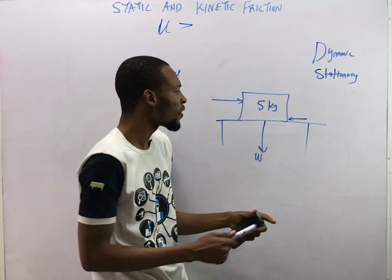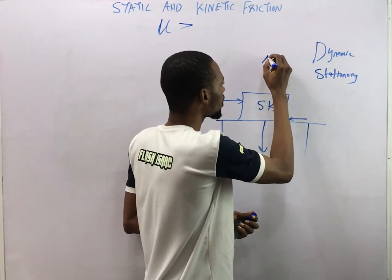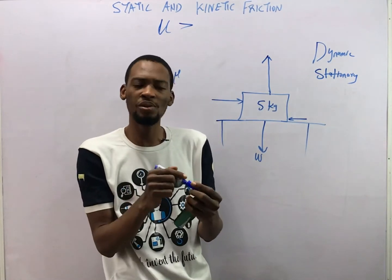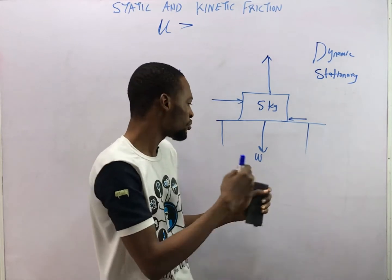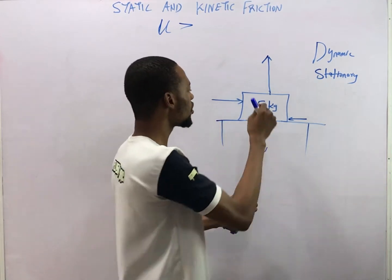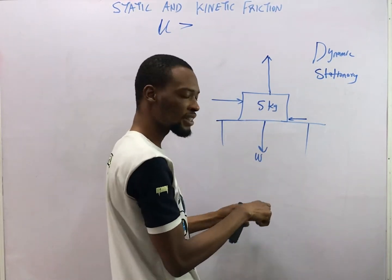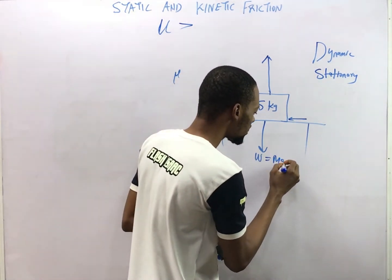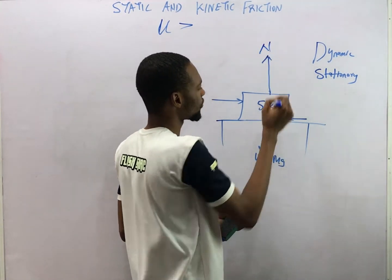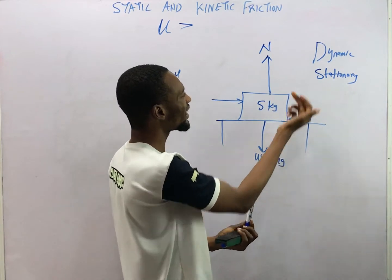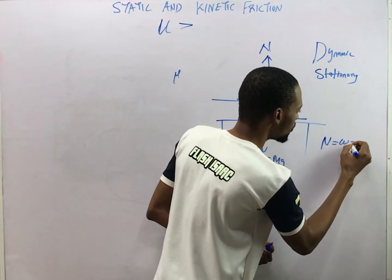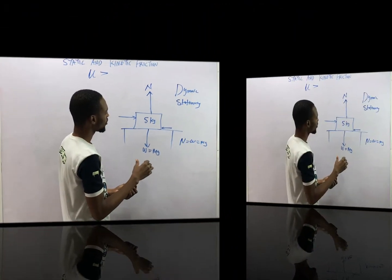That upward force is what we call the normal reaction. Remember Newton's Third Law: for every action there's an equal and opposite reaction. So the weight of the body acts downward, and weight equals mg. Weight equals the normal reaction, so normal reaction equals W equals mg. If the body is being pushed with an applied force, something here is the frictional force opposing the motion.